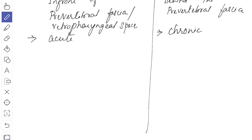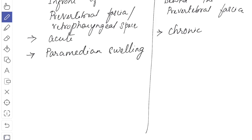In front of the pre-vertebral fascia, the pus formed due to acute retropharyngeal abscess may bulge forward producing a paramedian swelling, due to the fusion in the median plane between the buccopharyngeal fascia and the alar fascia. Whereas behind the pre-vertebral fascia, the inflammation will produce a median swelling.